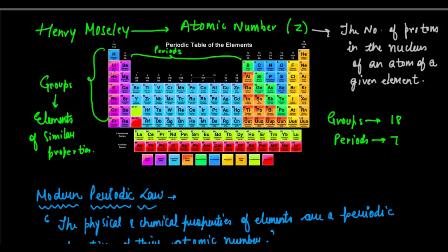For example, lithium, sodium, potassium, rubidium, cesium, francium — you can see that lithium has one valence electron, sodium also has one valence electron, potassium has one valence electron, rubidium has one valence electron. So in one way, they all form cations with one positive charge: lithium-plus, sodium-plus, potassium-plus, rubidium-plus, and so on. That is one similarity. In this way, he classified elements into groups and periods, with groups having elements of similar properties.